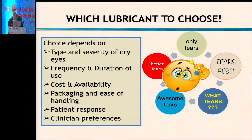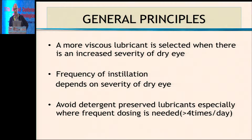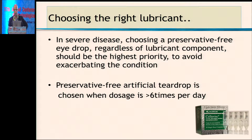So we've heard about what a lubricant contains, but how do you choose one? The choice depends on the type of dry eye. If it's a very severe dry eye, you'll probably want something with a milder preservative because you'll need to dose more frequently. Frequency and duration of use, cost, and availability all become important factors. For routine cases, garden variety dry eye, any lubricant will do. But for authentic keratoconjunctivitis sicca, you must choose something with a milder preservative. Avoid detergent-based preservatives when dosing more than four times per day, and in severe disease always go preservative-free if possible.